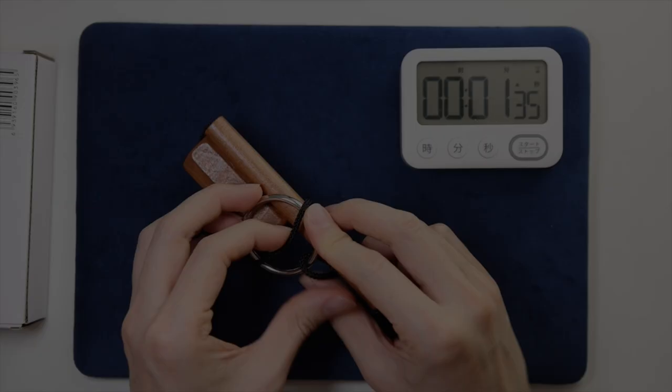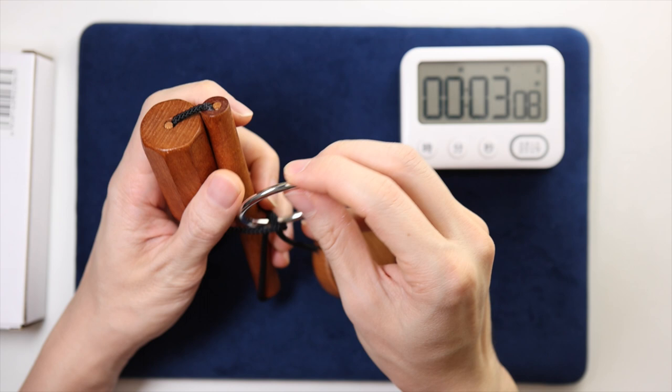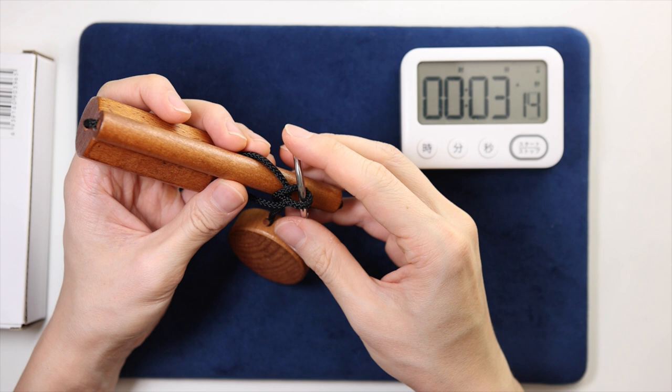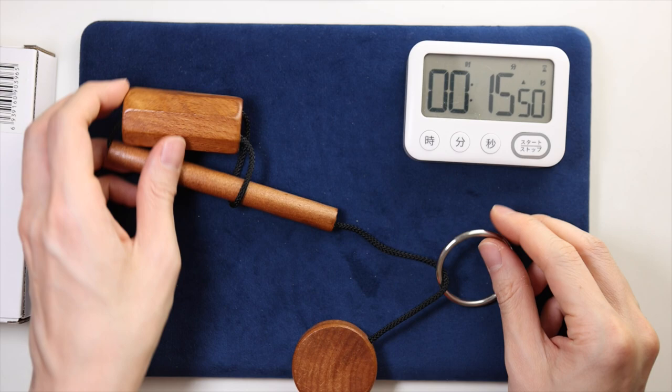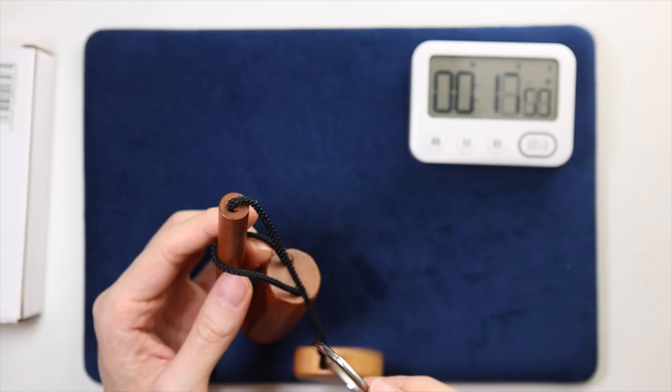So the metal ring can actually pass through this loop. After pushing it through and then taking it out, it seems that the rope connecting the wooden disc is getting a little bit tangled. Okay, after 15 minutes, I think I'm back to the original position. Let's try again.